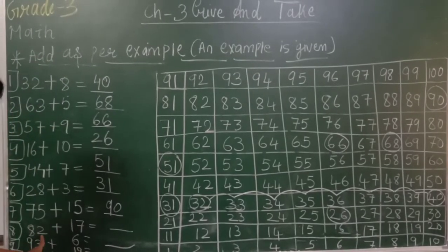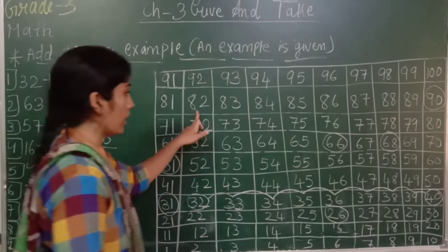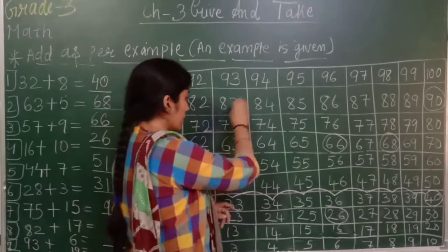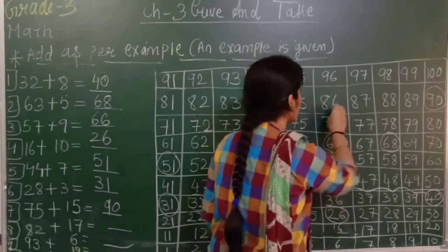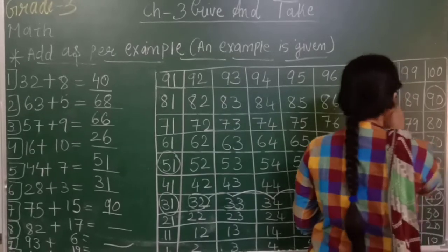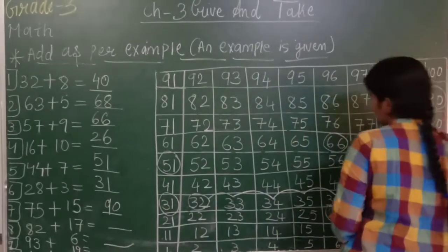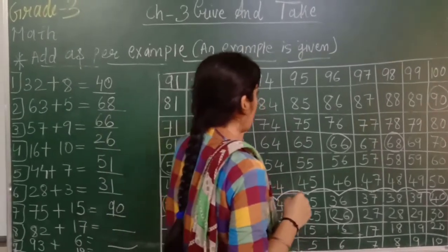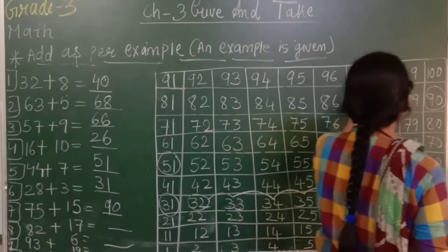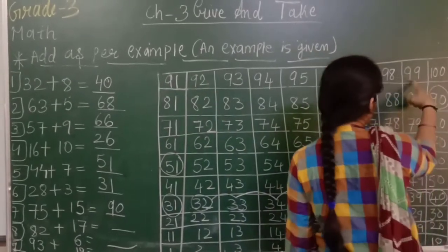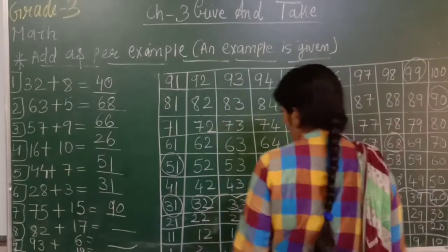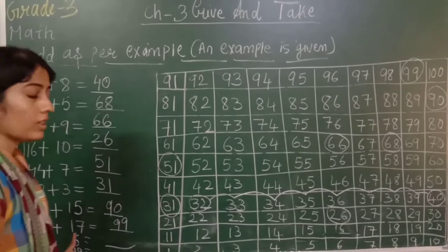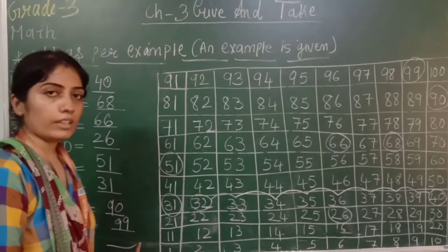Next, eighth number: 82 plus 17. Where is 82? Humko kitne steps chalna hai? 17. Counting 1 through 17. Answer kya hai? 99. That means agar hum 82 plus 17 karenge toh answer hai ninety-nine.